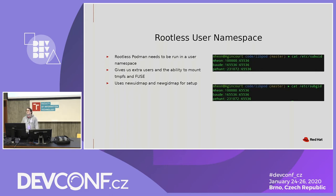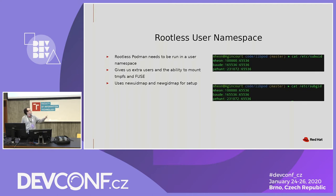Once we create this rootless user namespace using unshare, we are going to have to get the first and only set UID binaries involved: newuidmap and newgidmap. Those are going to read /etc/subuid and /etc/subgid — you can see those right there — and they're going to grant us some additional users based on that. You can see my username, mhion in there. It's going to give me 65,536 users starting at 100,000. Once we have these users, we have access to them and can use them in the container. So if you want to run a systemd in that rootless container, you're actually able to.